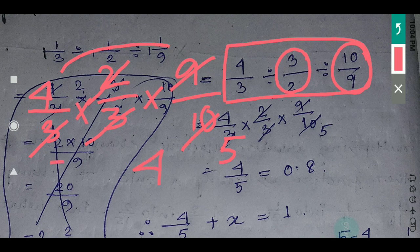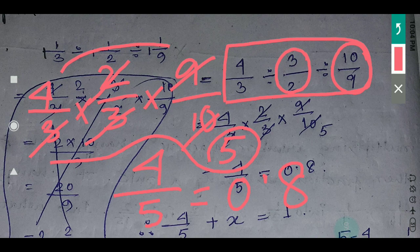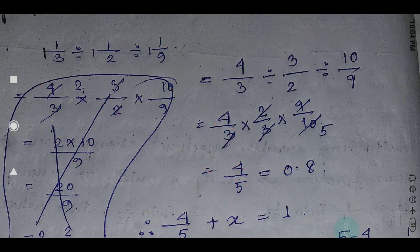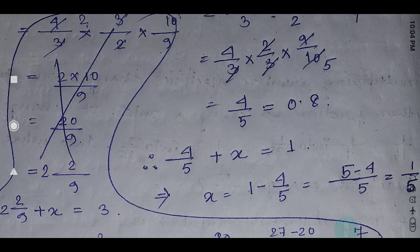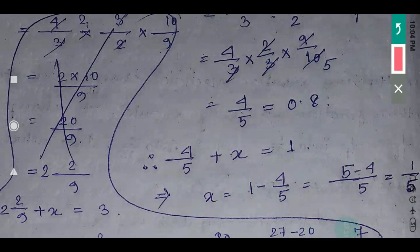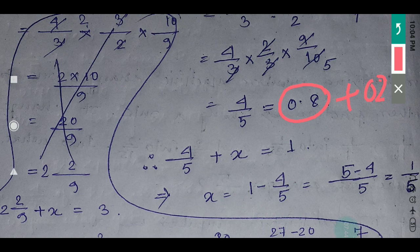So 4/3 multiplied by the reciprocal of 3/2, which is 2/3, multiplied by the reciprocal of 10/9, which is 9/10. The 3s cancel and the 2 and 10 cancel to give 5. So the result is 4/5, which equals 0.8. Near to 0.8, the nearest integer is 1. If you add 0.2 to 0.8, you get 1.